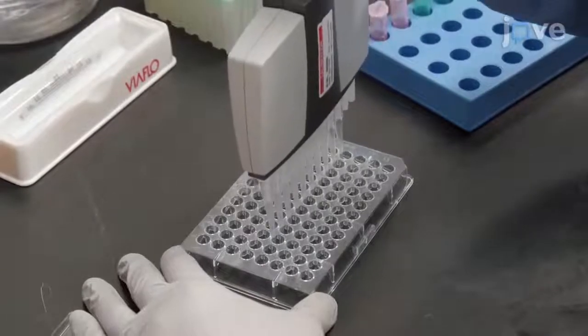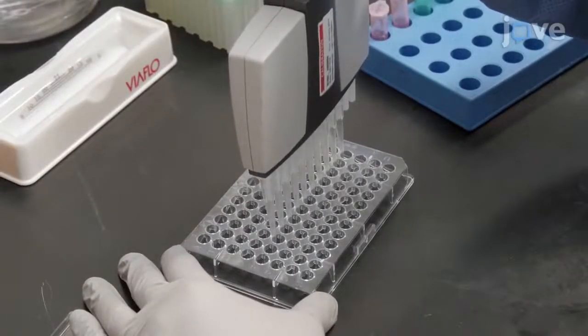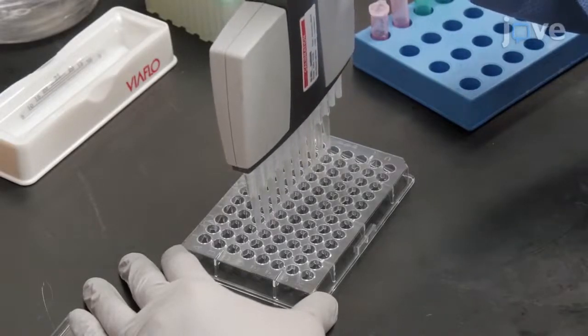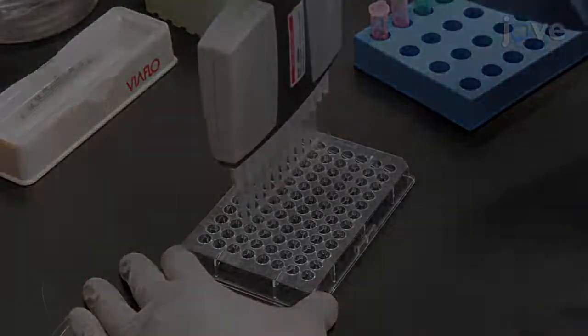Continue this serial dilution process through row A. After mixing the wells in row A, remove and discard 10 µL from wells 3A through 12A so that the final volume in all wells is 20 µL.